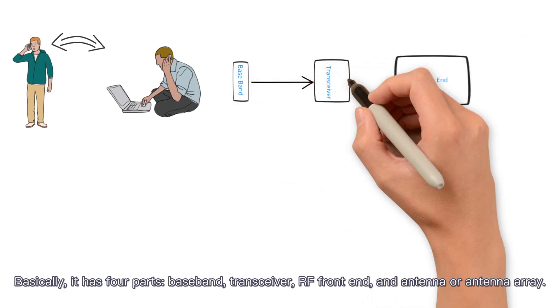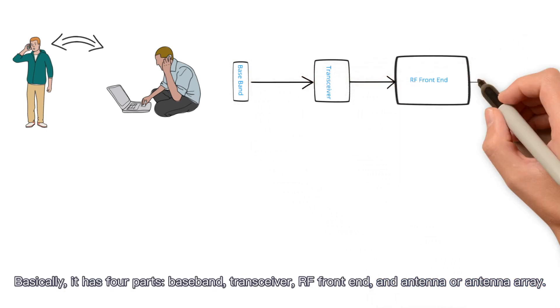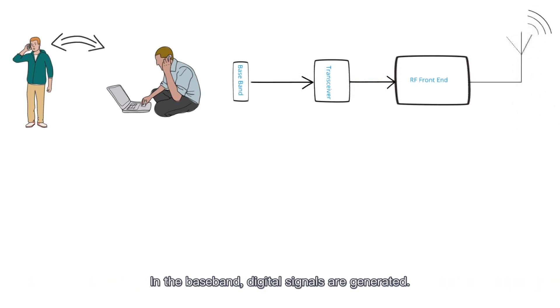Basically, it has four parts: baseband, transceiver, RF front end, and antenna or antenna array.